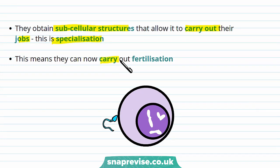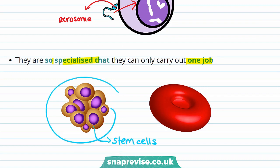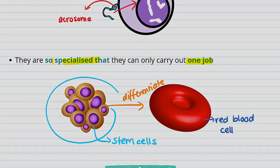The egg and sperm can now carry out fertilisation. For example, the sperm has a special subcellular structure called an acrosome, which contains digestive enzymes to get access to the egg so it can be fertilised. Specialised cells are so specialised that they can only carry out one job. Cells specialise from things called stem cells, which differentiate into specialised cells. For example, a stem cell can differentiate into a red blood cell, whose function is to carry oxygen around the body.